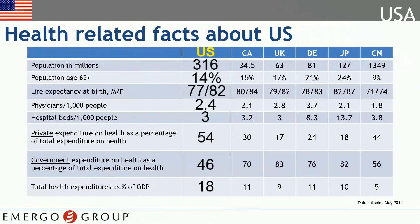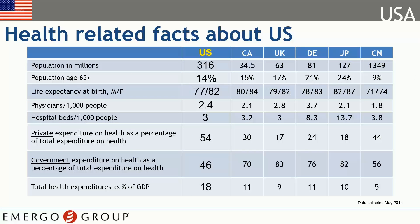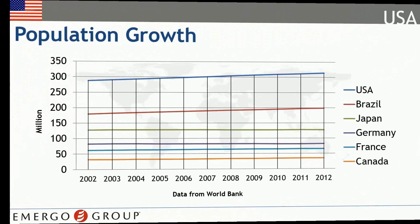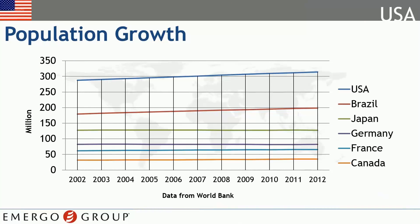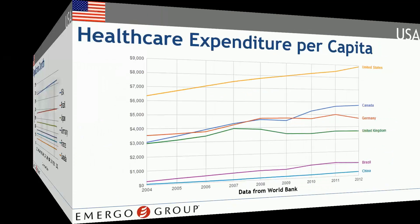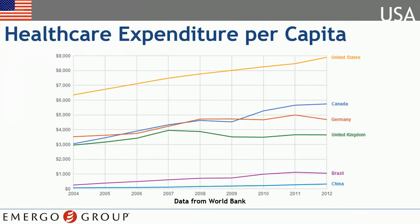Here are some key statistics about the U.S. compared to other major markets. As you can see, the government plays a smaller role in U.S. healthcare spending than any other countries, yet healthcare spending per capita is much higher. The U.S. population continues to grow consistently year over year, spurring steady growth in the medical device market. The U.S. spends more on healthcare per capita than any other country.